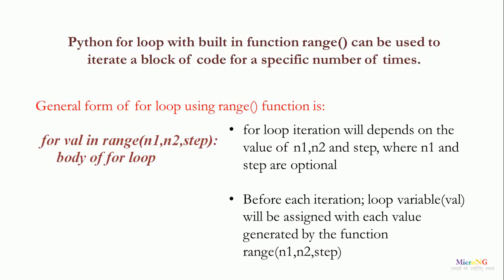For loop iteration depends on the values of n1, n2, and step, where n1 and step are optional. Before each iteration, the loop variable will be assigned with each value generated by the range function range(n1, n2, step).